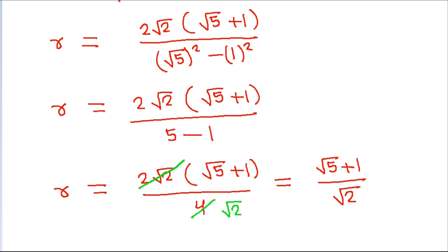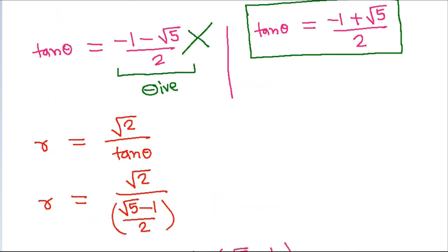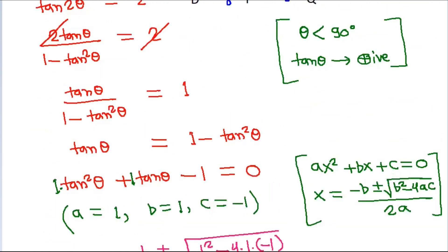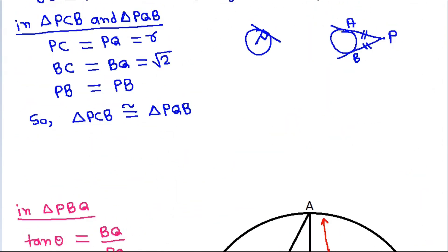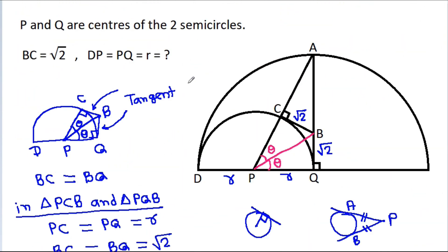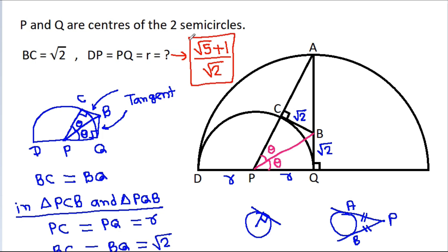So the final answer is r = (√5 + 1) / √2.